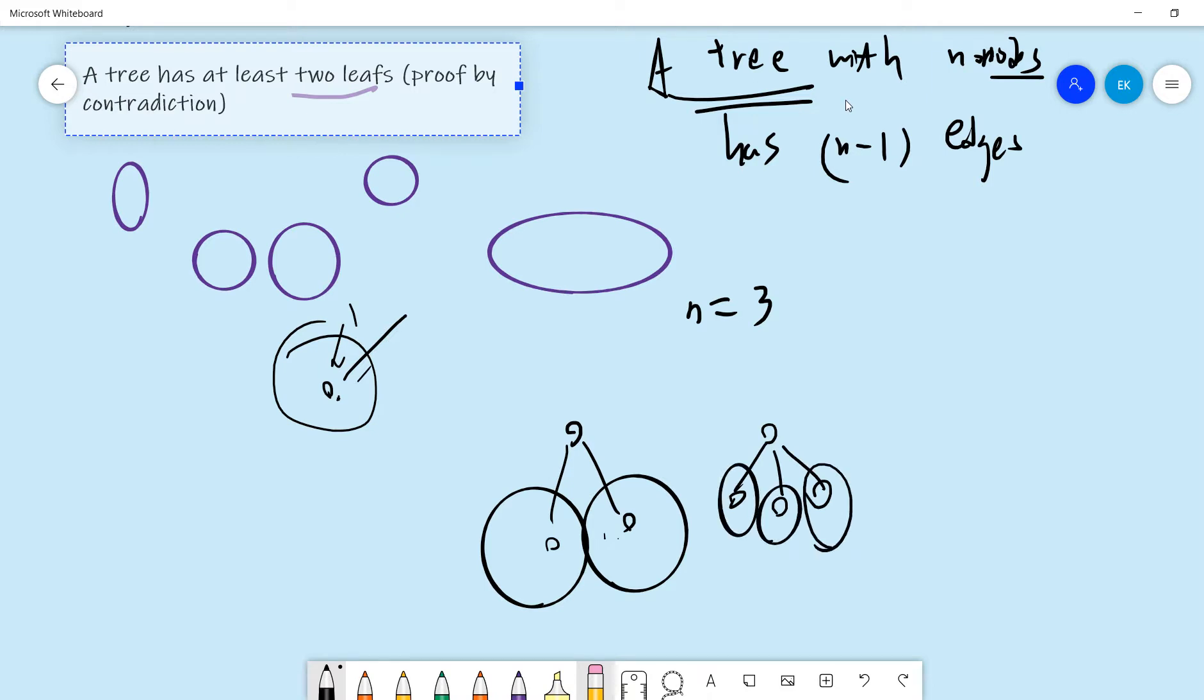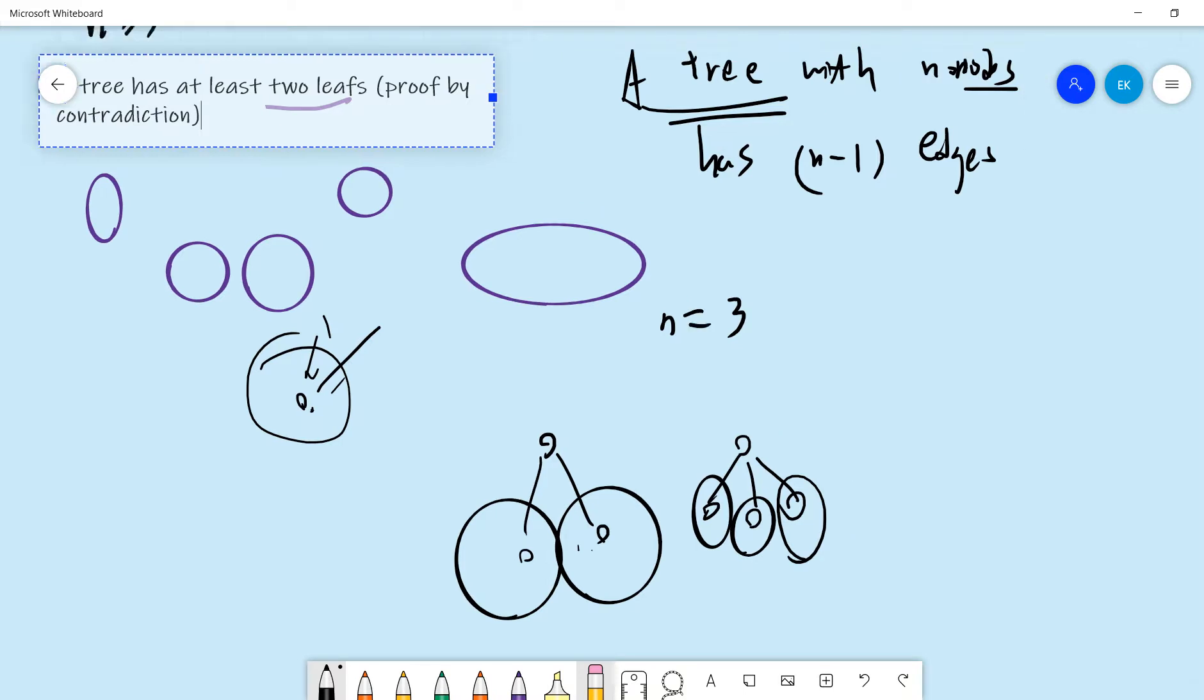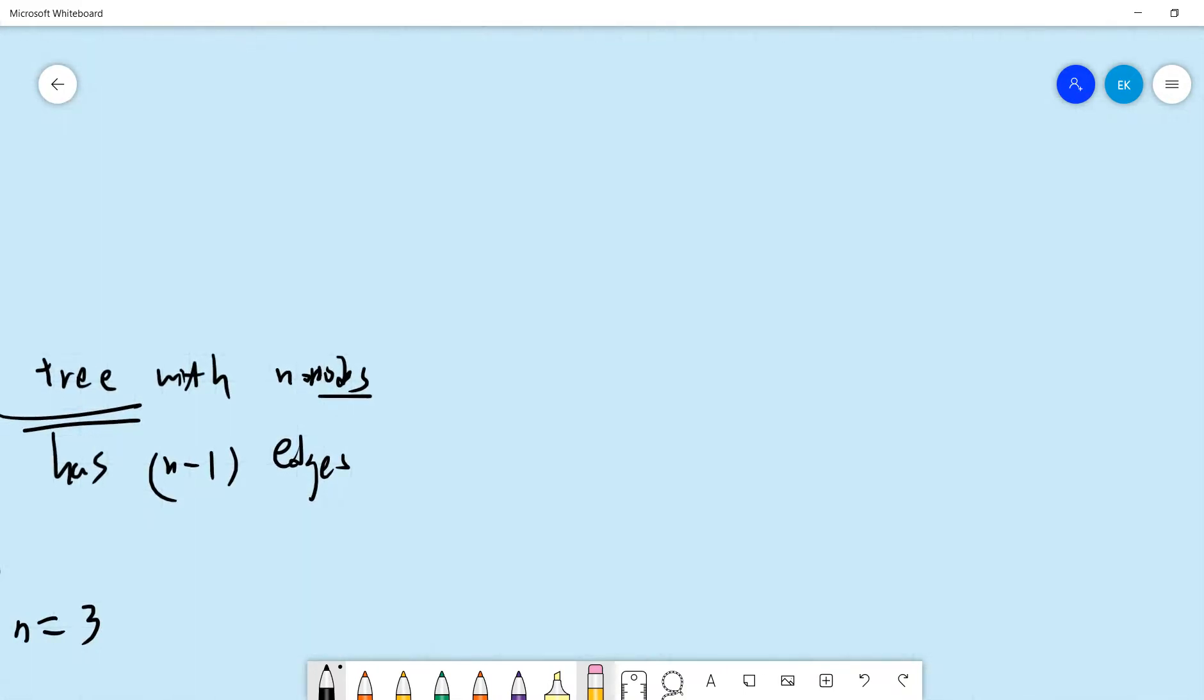The proof is simple, right? So proof, we use the handshaking lemma. Handshaking lemma tells you that for all the nodes in the tree, the degree sum of them should be two times the number of edges.